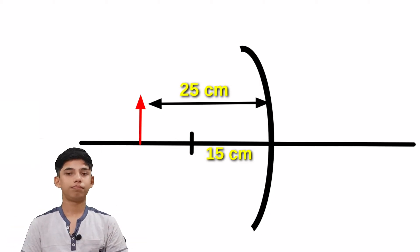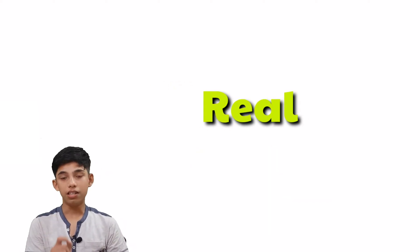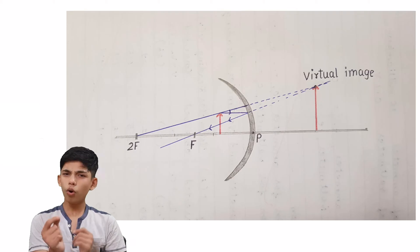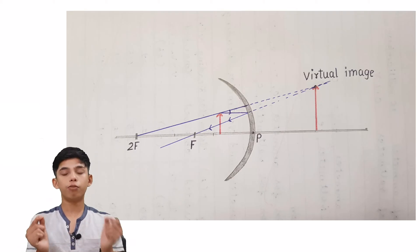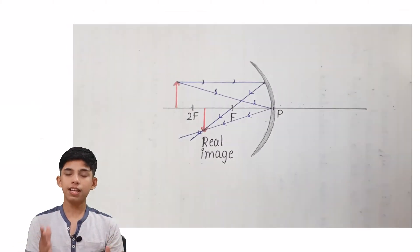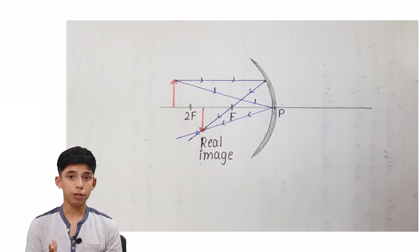Now tell me the image is going to be real or virtual. Got your answer? Well, the answer is real. The image would be real but how? In a concave mirror, the image would be virtual only when the object is placed between the pole and the focus. And if the object is placed anywhere else, the image would be real.